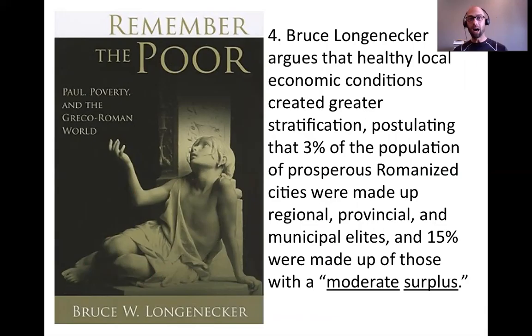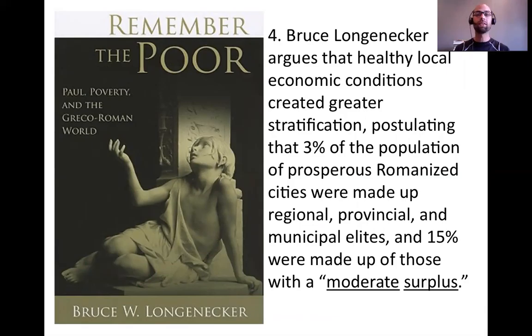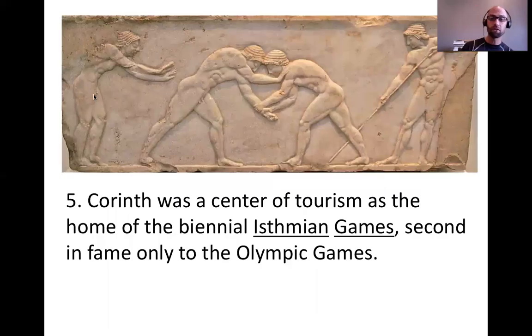In an influential recent book, Bruce Longenecker argues that healthy local economic conditions created greater stratification in the Corinthian population. He posits that three percent of the population of prosperous Romanized cities were made up of regional, provincial, and municipal elites, and fifteen percent had a moderate surplus. Corinth seems to have broken the typical mold, so we see Corinthians in house churches with homes large enough to meet in, with the means to support Paul's missionary efforts, suggesting diversity and stratification both in the city and the Corinthian church.